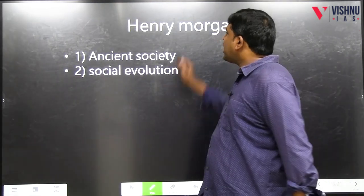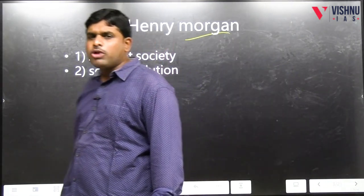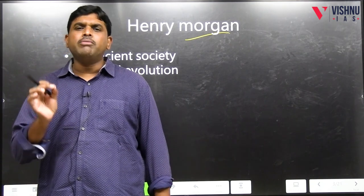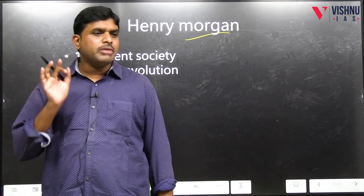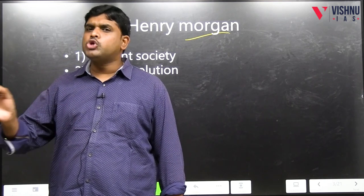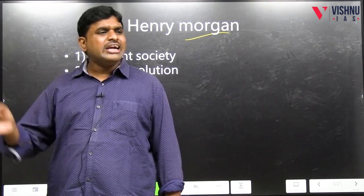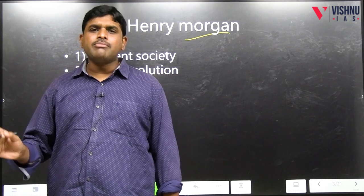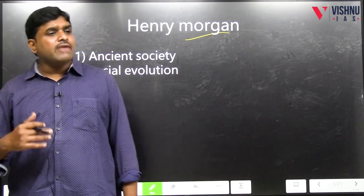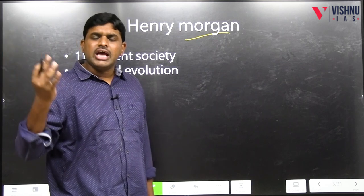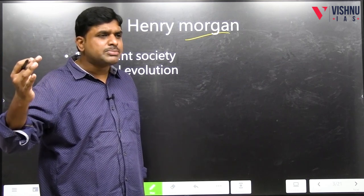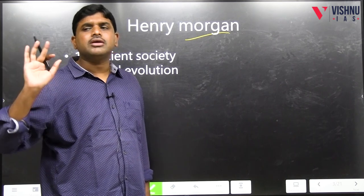The next side heading is Henry Morgan. Some students who are writing very good answers — please write the book's name, it is very important. The concept of social evolution is taken from Henry Morgan's 'Ancient Society,' in which he discussed evolution of society, evolution of marriage, evolution of family, evolution of economic subsistence, evolution of technology.